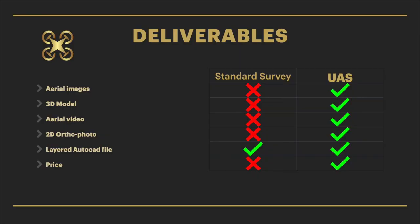So what do you get? You get all the aerial images used to create the 3D model, an aerial video, a two-dimensional orthophoto or ortho-mosaic, and a layered AutoCAD file — all for cheaper than you would normally pay for a standard survey. If you want to discuss this further or have any questions, please ask.